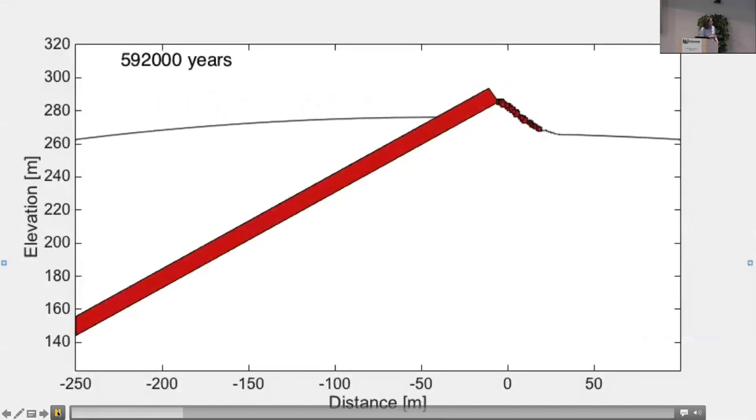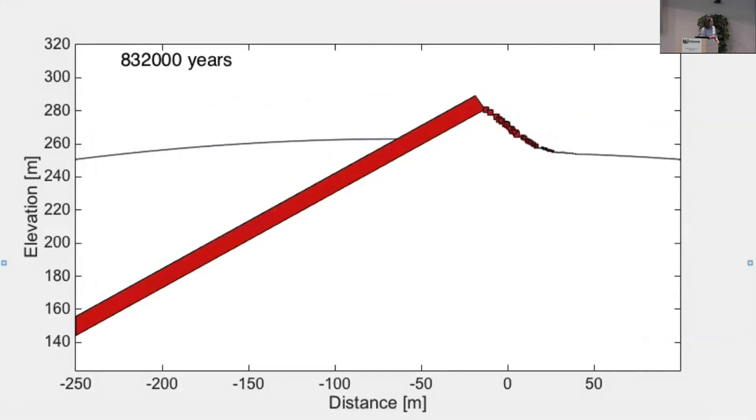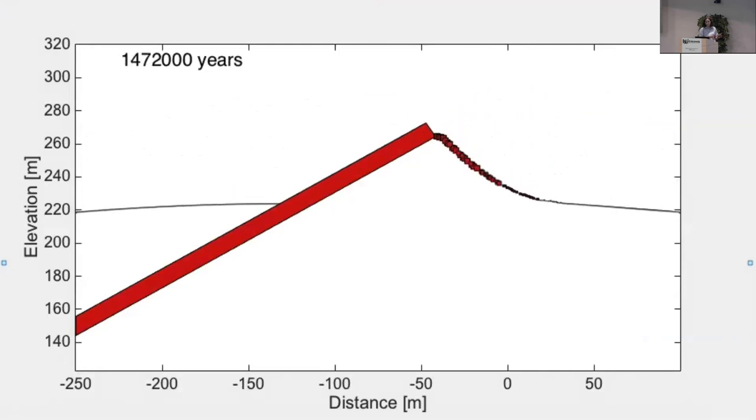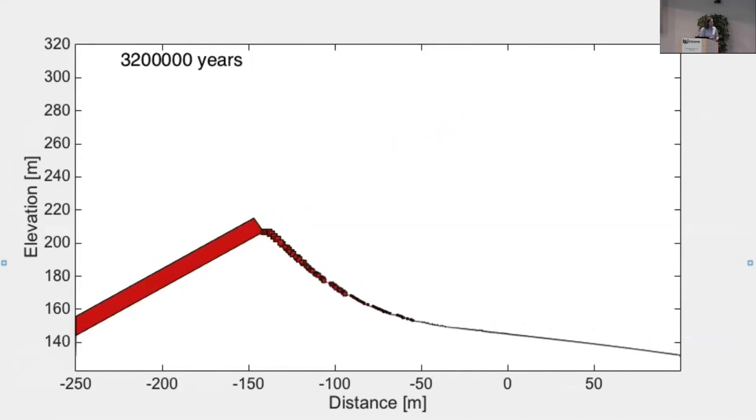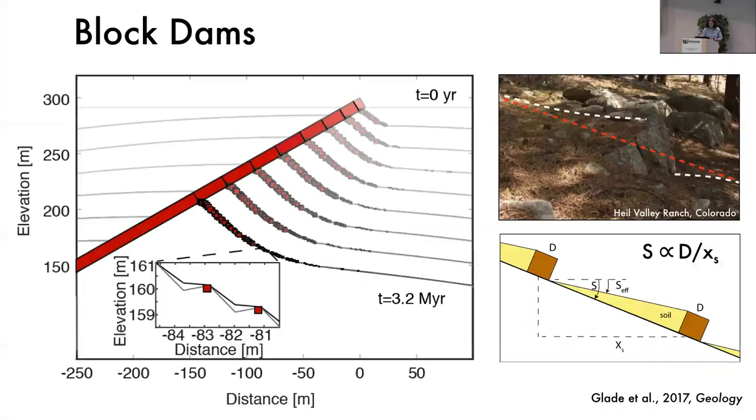I want to point out that the parts of the hillslope that don't have blocks follow that Gilbertian expectation that I talked about before where the slope is higher further down the hillslope. But if you notice over time, the ramp, the part that's covered in blocks, develops this opposite concave up shape. So the slope is much steeper at the top here than at the bottom where the blocks are small.